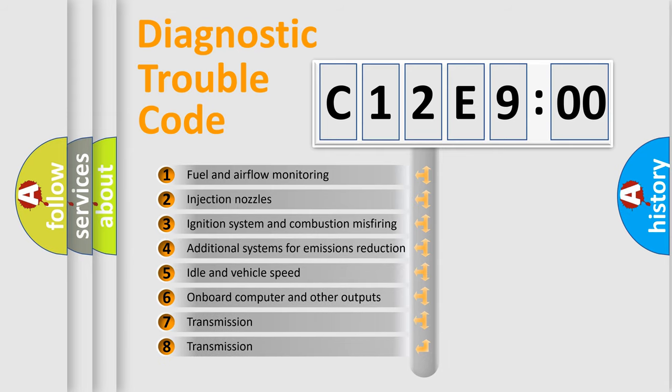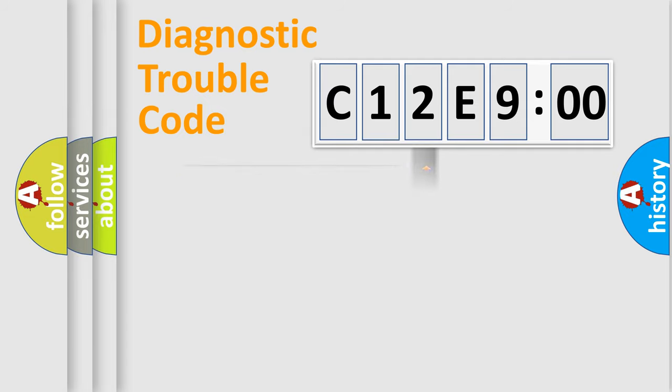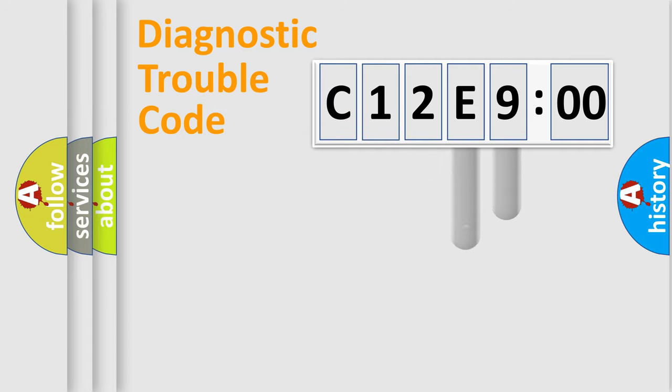The third character specifies a subset of errors. The distribution shown is valid only for the standardized DTC code. Only the last two characters define the specific fault of the group.